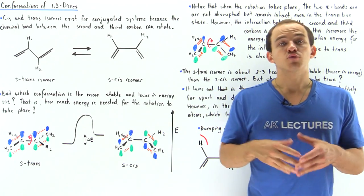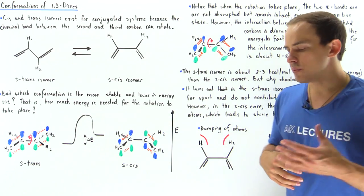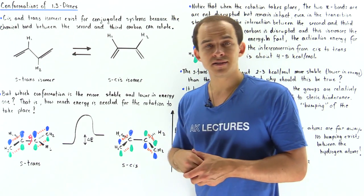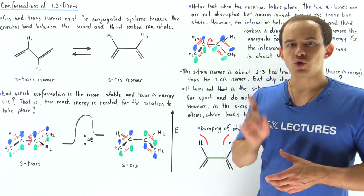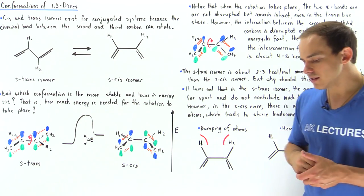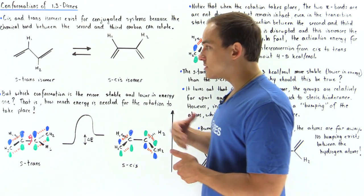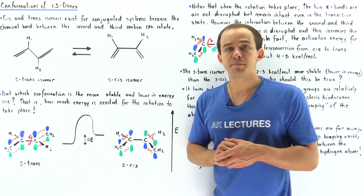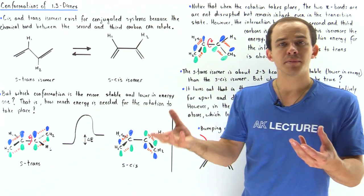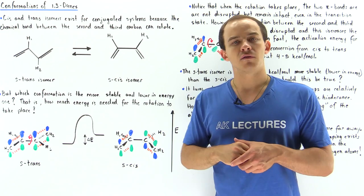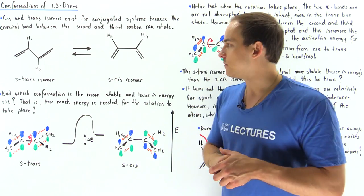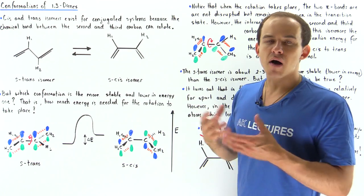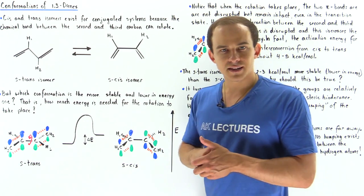In the same way that regular alkenes form cis-trans isomers, conjugated 1,3-dienes can also form cis-trans isomers because the chemical bond between the second and third carbon on the 1,3-diene is capable of rotating. For example, let's take the 1,3-butadiene molecule, which is a conjugated system.